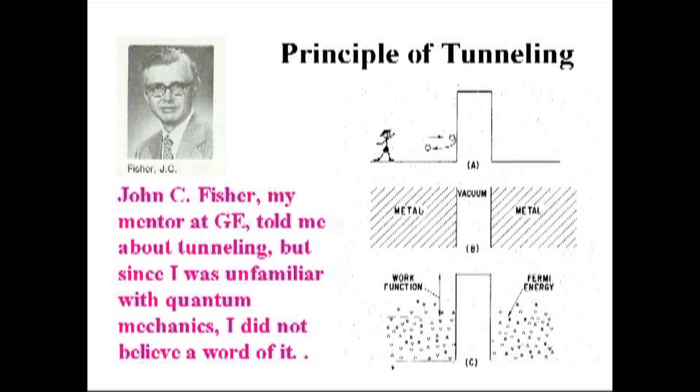This is what he told me: here's a guy throwing a tennis ball against a wall or fence, and you know that a tennis ball will bounce back. But if you continue throwing the tennis ball against the wall, John Fisher told me, the ball sooner or later will appear on the other side of the wall and there will be no hole in the wall and the tennis ball will look exactly like it did. That's quantum mechanical tunneling. And I see that you don't believe it and I didn't either.